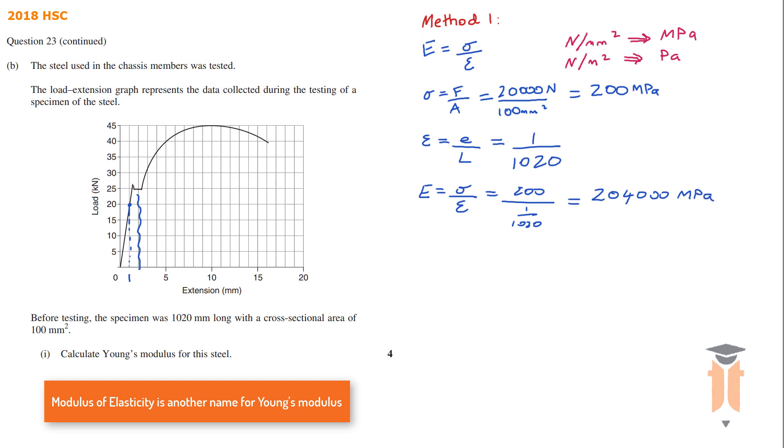So now they want the answer in gigapascals. When we convert megapascals to gigapascals we're going from a small unit to a big unit, so we divide. Megapascals is 10 to the 6. Gigapascals is 10 to the 9. You look at the difference. So we divide it by 10 to the power of 3. Therefore it's going to be 204,000 divided by 10 to the power of 3, which gives you a value of 204 gigapascals.